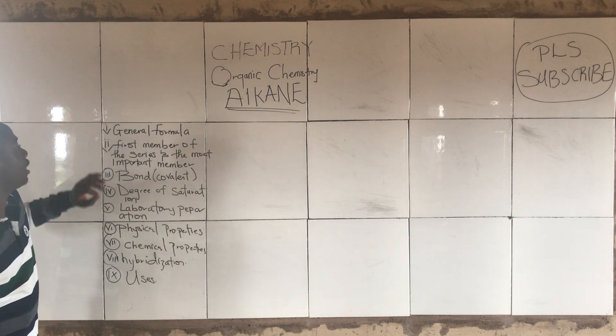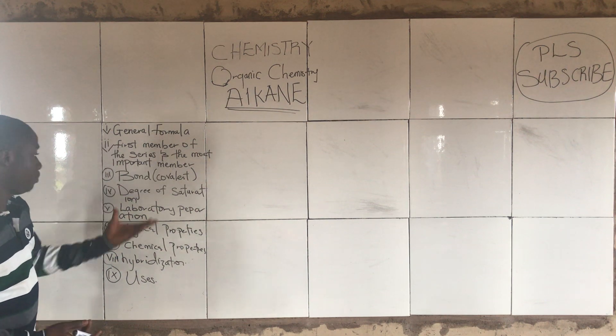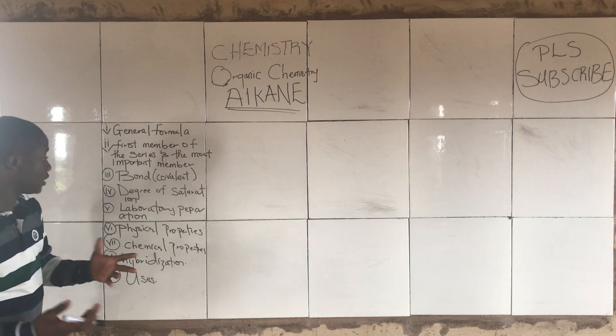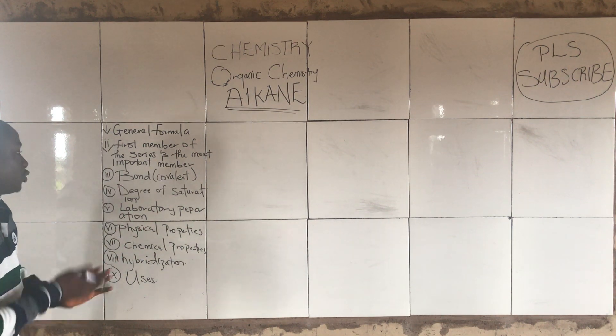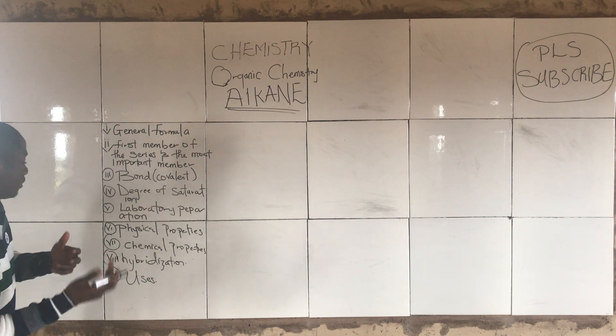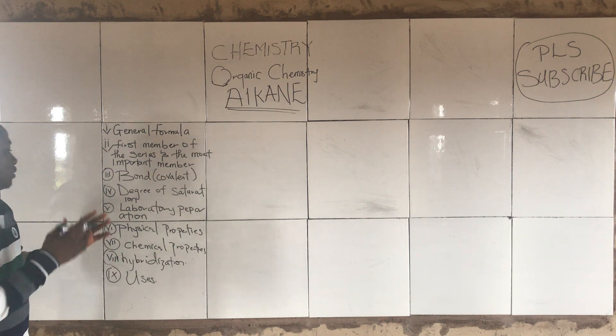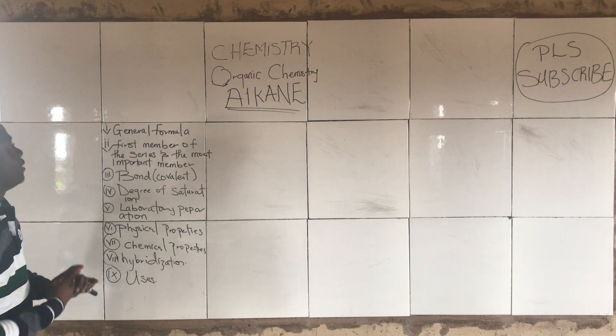You can see I wrote the chemical formula, the first member, the bond, the degree of saturation, the laboratory preparation, the physical properties, the chemical properties, hybridization and the uses.